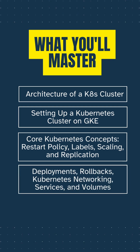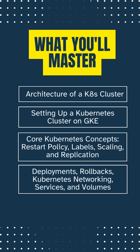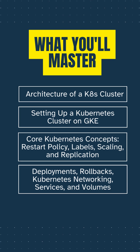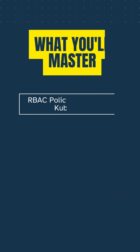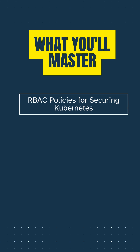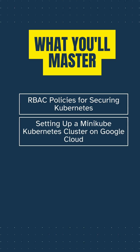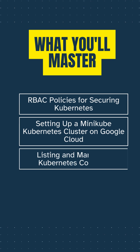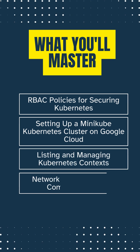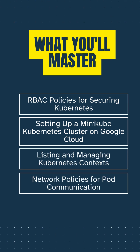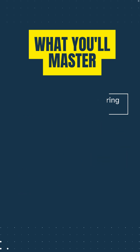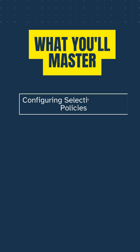Deployments, Rollbacks, Kubernetes Networking, Services, and Volumes. RBAC Policies for Securing Kubernetes. Setting up a Minikube Kubernetes Cluster on Google Cloud. Listing and Managing Kubernetes Contexts. Network Policies for Pod Communication. Configuring Selective Network Policies.